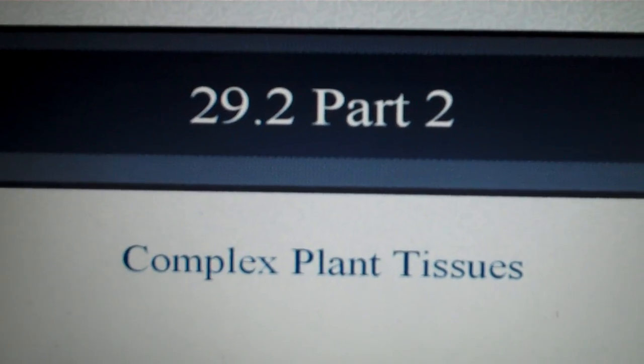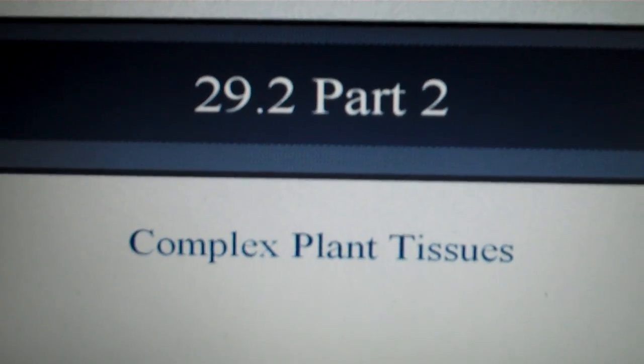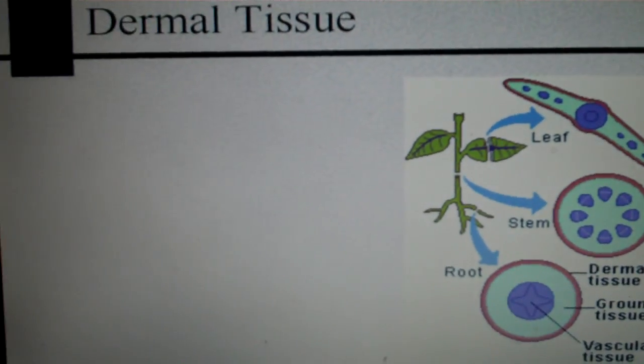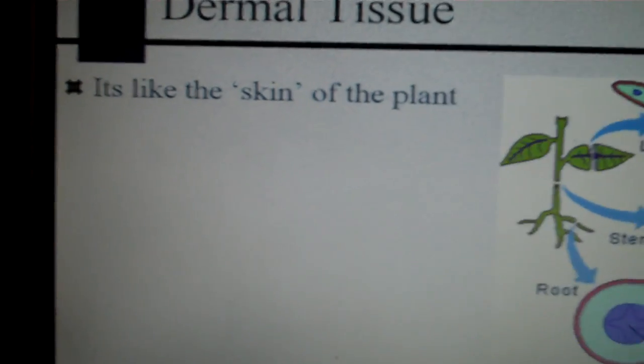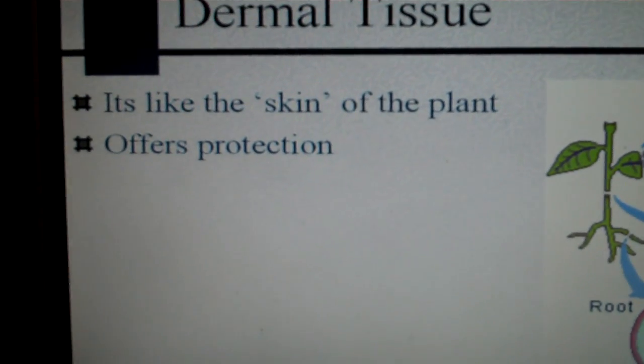29.2 part 2, complex plant tissues. So the first tissue we will discuss is the dermal tissue. Now dermal tissue is like the skin of the plant. It offers protection.